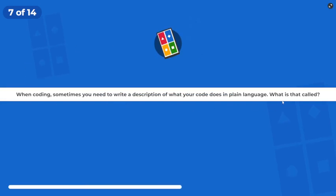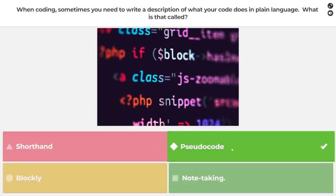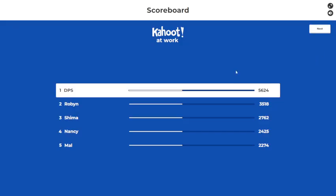When coding, sometimes you need to write a description of what your code does in plain language. What is that called? Pseudo code? Yes! We're on a streak, this is great!